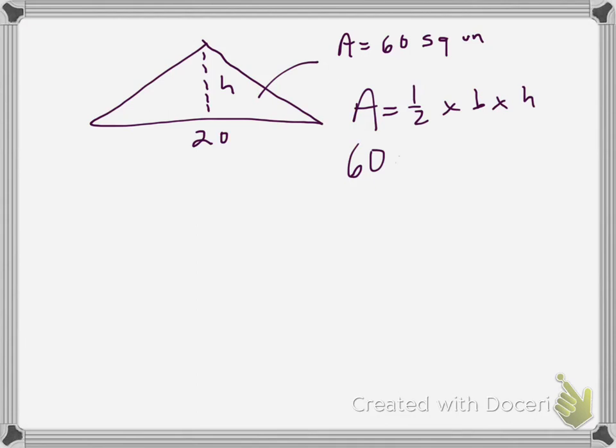And then we're going to be starting by substituting in the things that we know. I know the area is 60. I can keep my 1 half. My base, that's given as 20. And my height is not. So I'm just going to keep that h.